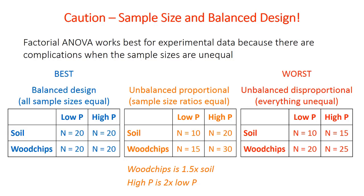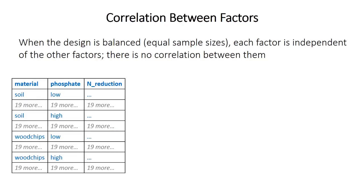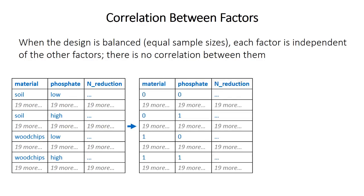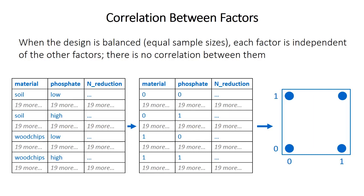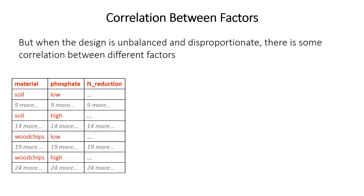Why are unbalanced designs problematic? When the design is balanced, each factor is independent of the other factors — there's no correlation between them. But what does correlation mean here when factor levels are words like soil or wood chips? Imagine converting them to numbers: soil is 0, wood chips is 1, 0 for low phosphate, 1 for high phosphate. In a balanced design with 20 data points in each of the four cells, there's no correlation at all. But when the design is unbalanced and disproportionate, there's some correlation between factors — for example, knowing that the material is soil tells you it's slightly more likely that phosphate will be high.